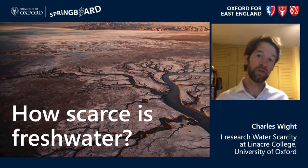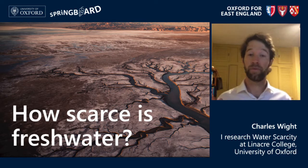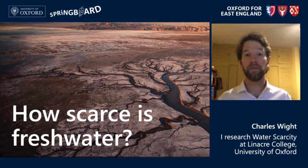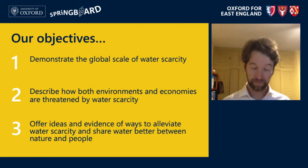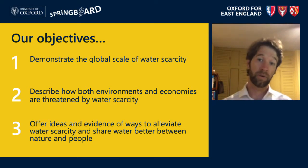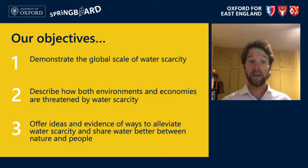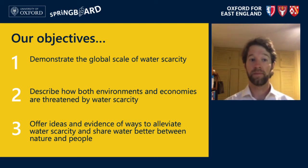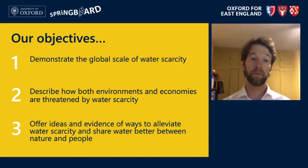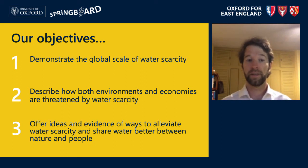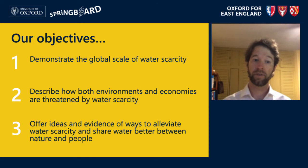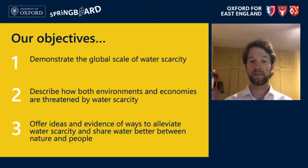The talk I wanted to provide today is on freshwater scarcity, which in simple terms is an imbalance of demand and supply of water. The objectives for today are threefold: first, to demonstrate the global scale of water scarcity; second, to describe how both the environment and the economies are threatened by water scarcity today and in the future; and third, to offer ideas and evidence of ways to alleviate water scarcity and share water better between nature and people, both at the individual level and at the global level.